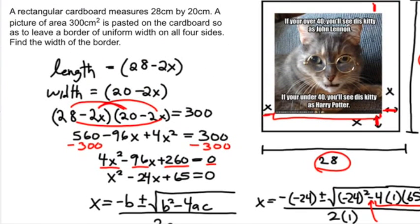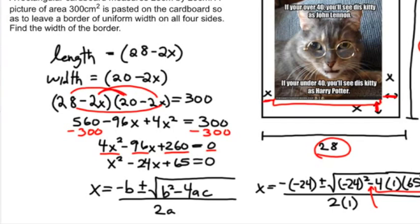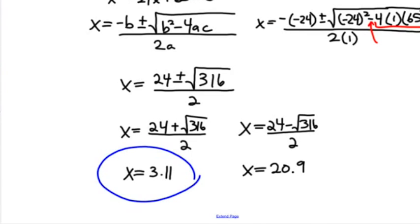We know it has to be either 3.11 or 20.9. We know it cannot be, we know the border cannot be 20.9. There's a very important reason why that border cannot be 20.9. So then our answer has to be 3.11, which means the width equals 3.11 centimeters. Always remember the context of the problem and that's how you're going to remember your units.